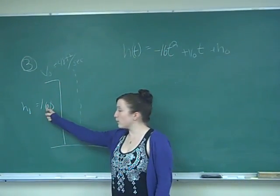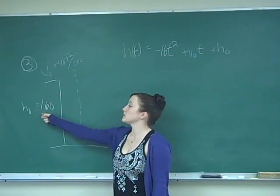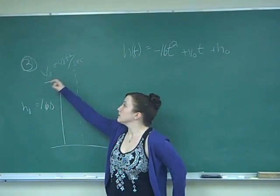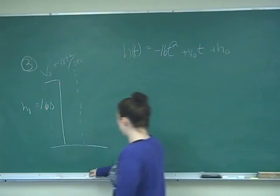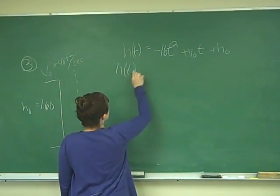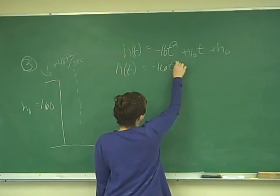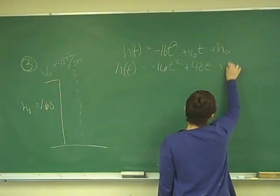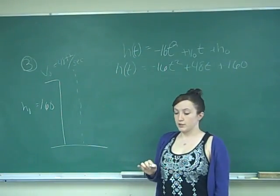Because it says that he threw it off of a building 160 feet high. So his initial height is 160. It says with a velocity of 48 feet per second. So that is your initial velocity. That's what he threw it with. So we can plug those in. So we get our h of t is equal to negative 16t squared plus 48t plus 160. So we filled in our equation now.